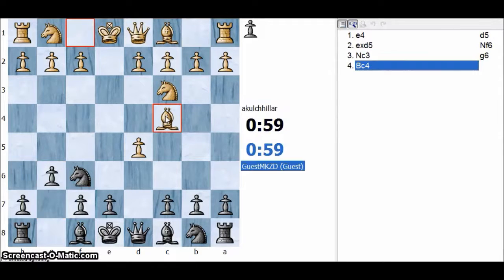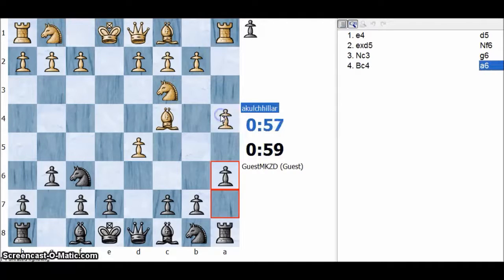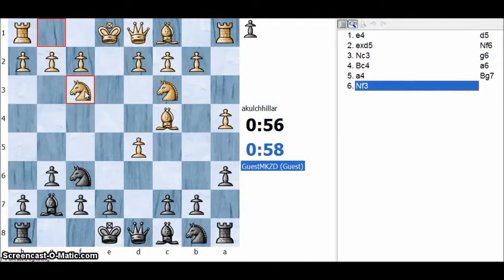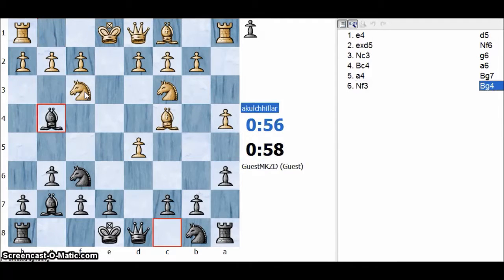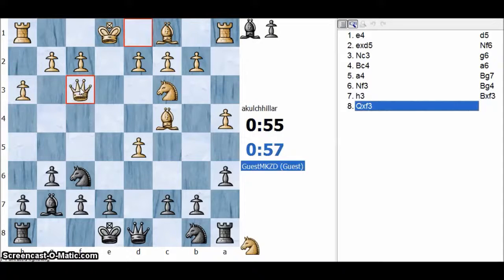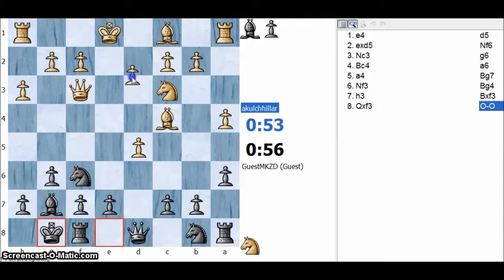This is generally how I play the Sicilian because this gives white some fighting chance. Let me play c3, a multipurpose move because in the future I can play for d4 and if a6 and b5 then I can retreat my bishop to c2. Now let me castle.